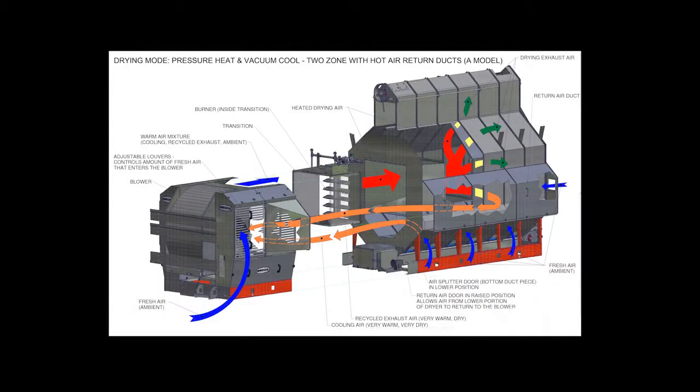In the pressure heat vacuum cooling drying mode, the dryer draws warm air from the grain cooling section and recycles it through the fan. This air is mixed with fresh air being pulled through louvered openings at the front of the dryer next to the fan. These two volumes of air are then mixed and passed through the burner into the grain basket.